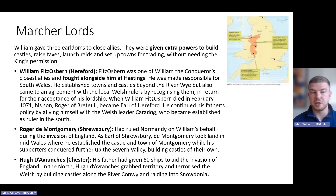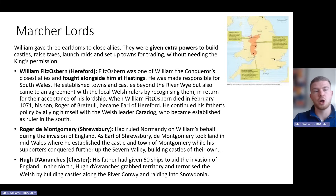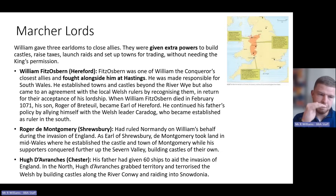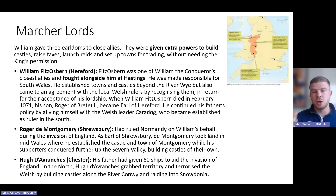Finally, Hugh de Avranches was put in charge of Chester. He hadn't fought at Hastings, but his father had given 60 ships to William to support the Norman conquest. Hugh de Avranches was given charge of the north of Wales — he grabbed territory, terrorised the Welsh, built castles along the River Conwy, and raided into Snowdonia, the mountain range where Mount Snowdon is located.